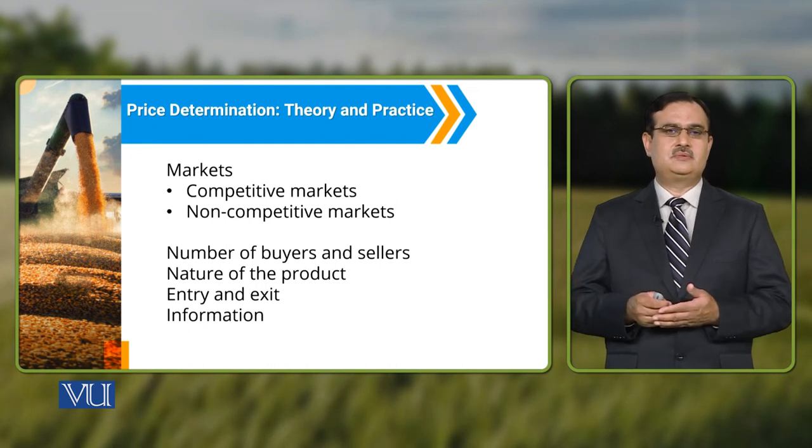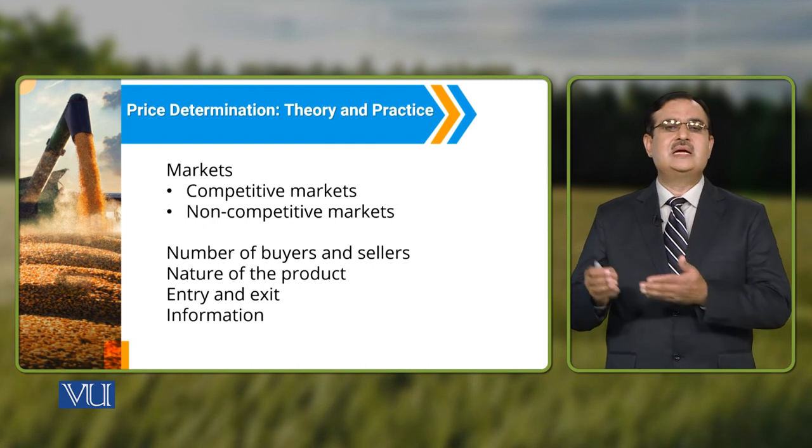When we talk about market equilibrium, it is observed at a point where demand is equal to supply. Market equilibrium involves the number of buyers and sellers that take place in a market. At the same time, there is some role of entry and exit of firms and producers in a particular market.